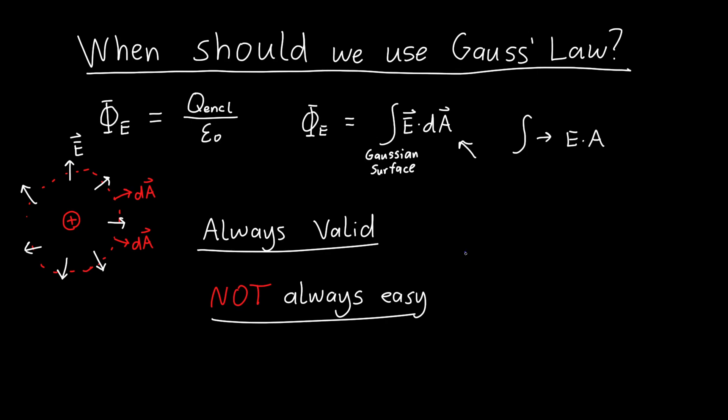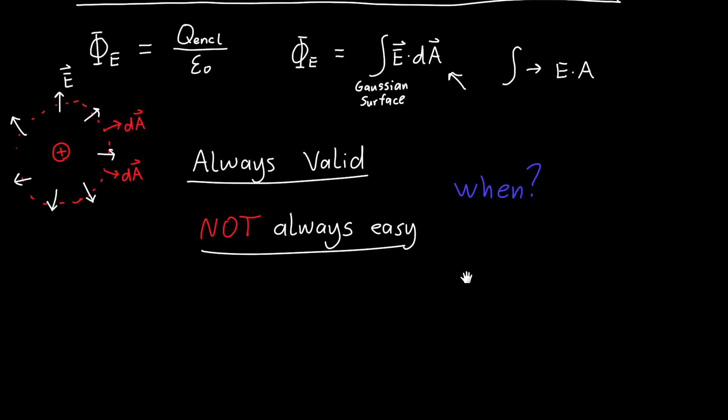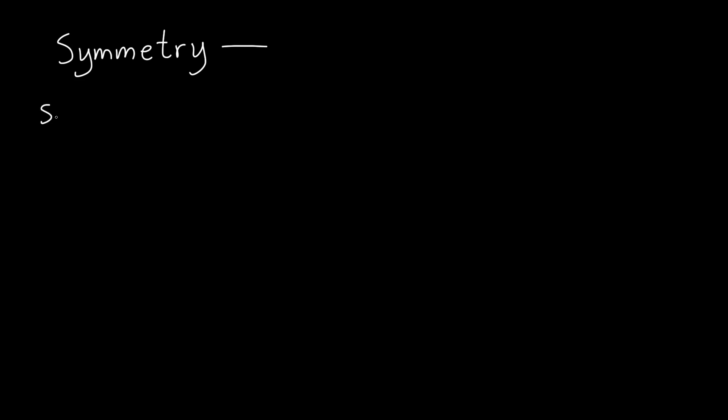The question is: when is Gauss's law easy to use and when is it not? The answer has to do with symmetry. There are a few different kinds of symmetry we can use Gauss's law for. The first is spherical symmetry — anytime our charge distribution has spherical symmetry.